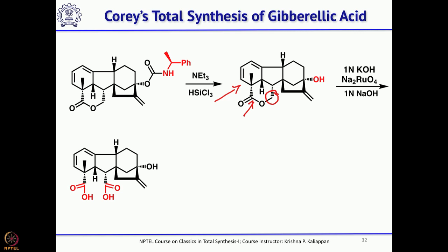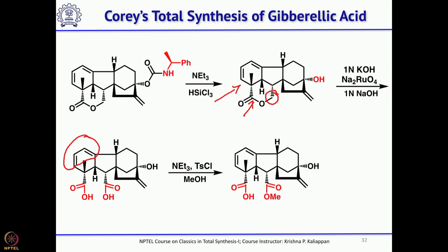There are four rings now, and you need only one more ring — a lactone. This diene should form a lactone along with one hydroxyl group, and then the total synthesis is accomplished. Before iodolactonization with the carboxylic acid, the other carboxylic acid should be protected. That was selectively done by treating with triethylamine, tosyl chloride, and methanol.